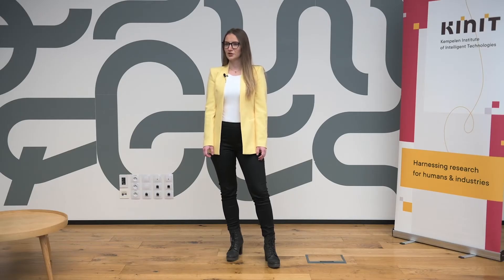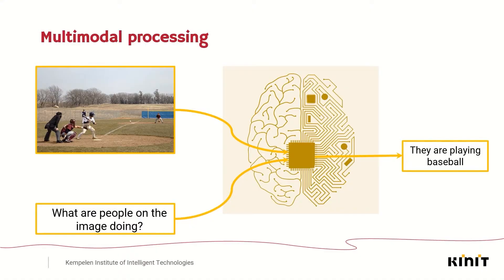You can come up with a story, answer questions someone might ask, or given the description find this image in hundreds of others. Something so natural for you is called visual language multimodal processing — when we train deep learning models to combine visual and language content.